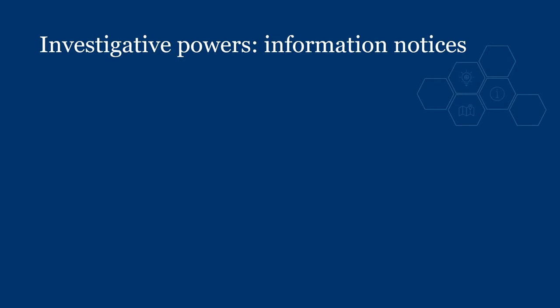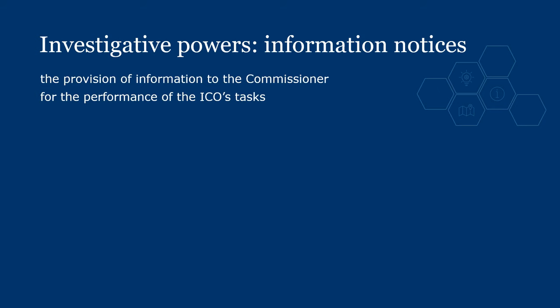Article 58 of the UK GDPR says the Commissioner shall have the power to order controllers and processors to provide any information the ICO requires for the performance of its tasks. If a controller is not complying, we can issue an information notice. Sections 142 to 145 of the DPA explain how information notices can and cannot be used, what must be included in a notice, and the right of appeal against the notice to the First-tier Information Rights Tribunal. Article 31 of the UK GDPR gives controllers and processors the general obligation to respond to the ICO.